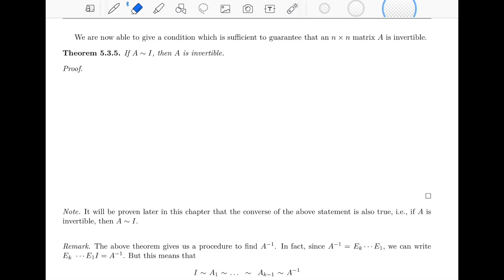Welcome back. This is the final video of section 5.3, and we've been building up to the statement, to the theorem that we're about to see, theorem 5.3.5, which tells us that if A is rho equivalent to I, then A is invertible.